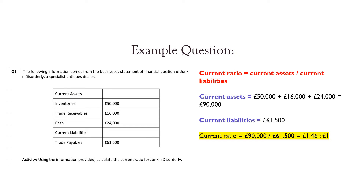Let's look at an example question. The following information comes from the statement of financial position of Junk and Disorderly, a specialist antiques dealer. Use this information to work out their current ratio. Current ratio is current assets divided by current liabilities. To work out the current assets, we add up the inventories, trade receivables and the cash: £50,000 plus £16,000 plus £24,000 gives us £90,000. The current liabilities are £61,500. So the current ratio is £90,000 divided by £61,500, which means that the current ratio is 1.46 to 1.